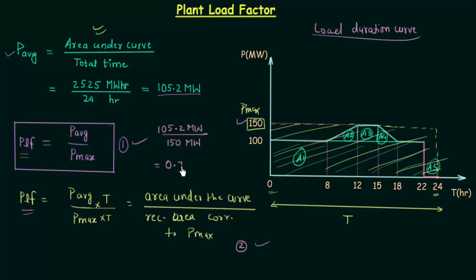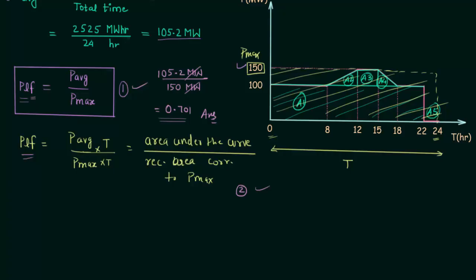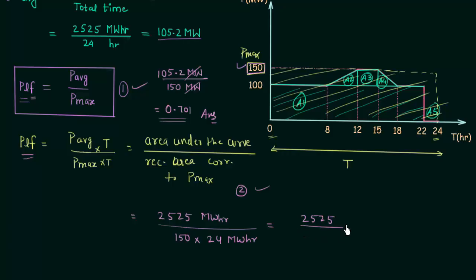When you solve it you will get 0.701, and there will be no unit because MW over MW cancels out. So 0.701 is the answer. Now let us calculate the PLF using the second way. The area under the curve is 2525 MWh, which we calculated in the last presentation. The rectangular area corresponding to P max is 150 multiplied with 24, which equals 3600 MWh. When you solve it you will again get 0.701, which is the same as the answer obtained using the first way.